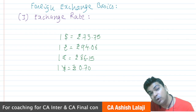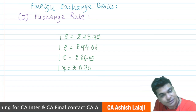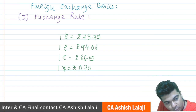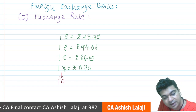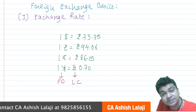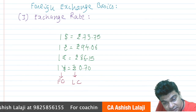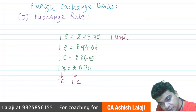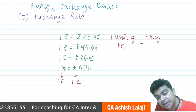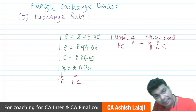From an Indian viewpoint, all these currencies — dollar, pound, euro, yen — are foreign currency (FC), while the rupee is the local currency. We are expressing that one unit of foreign currency is equal to how many units of local currency.